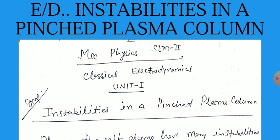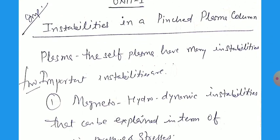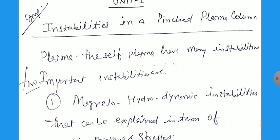Now today we will discuss instabilities in the pinched plasma column, means we have a plasma column which is pinched by this type of magnetic field, self-produced magnetic field. The self-pinched plasma have many instabilities.